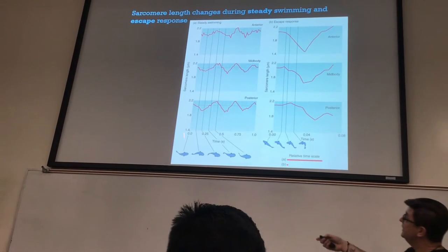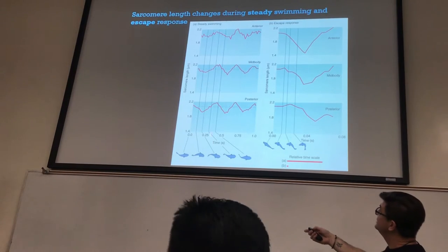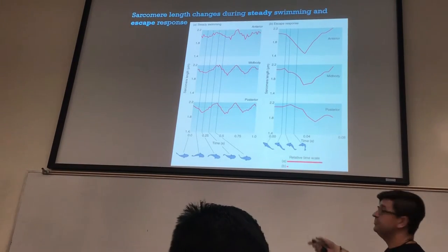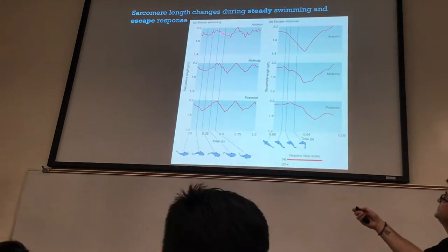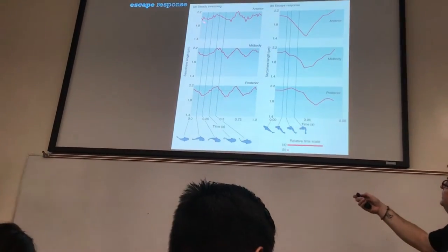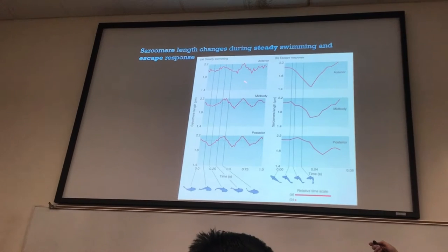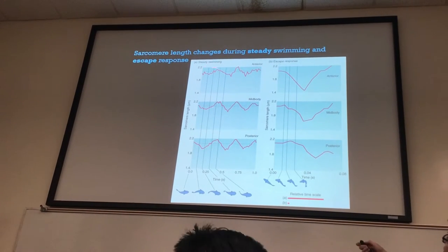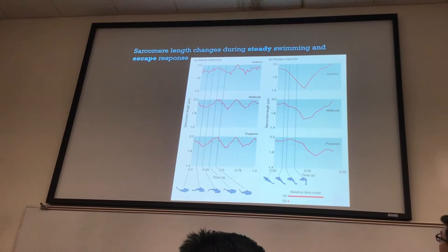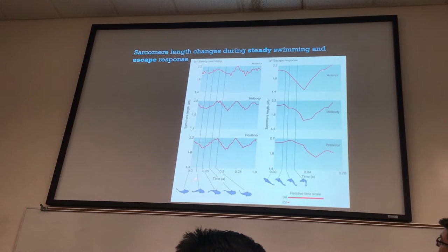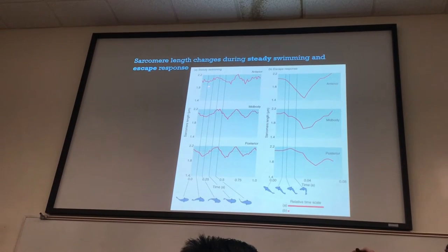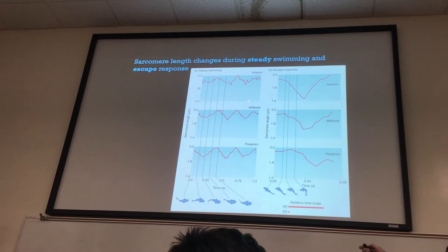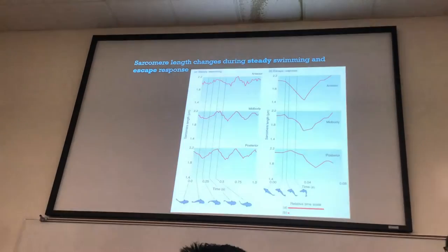These lines are showing you what the sarcomere length is at different positions along the fish length. When the fish is just cruising and we're looking at the anterior part of the body, you can see it doesn't really move a whole lot.